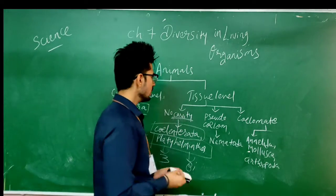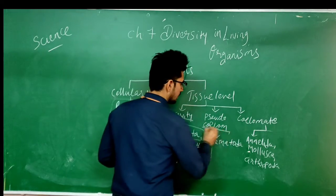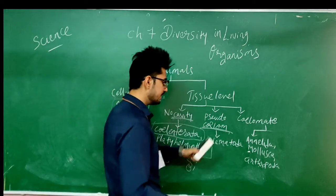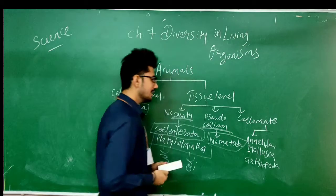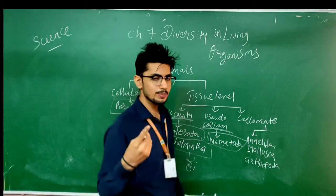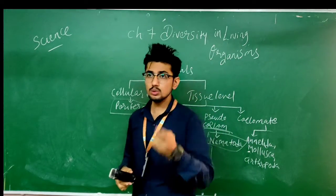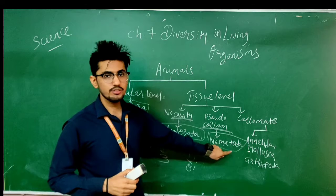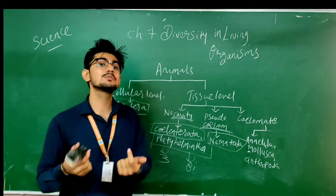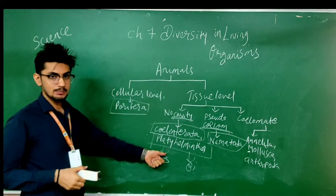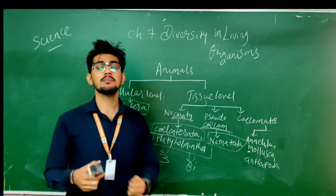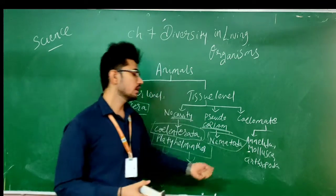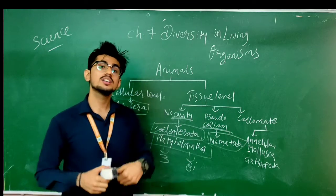Now let us move on to the next level, which is the pseudocoelom. There is not an original hollow space but they are trying to make a hollow space in their body for the organs. The only division in the pseudocoelom is Nematoda. Nematoda is mostly similar to Platyhelminthes — they are also triploblastic and bilaterally symmetrical. The key difference is that now they are having a slender cylindrical body instead of a flat body, which gives them much more space compared to Platyhelminthes, allowing a higher level of differentiation inside them.